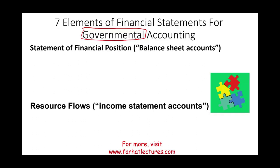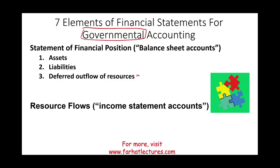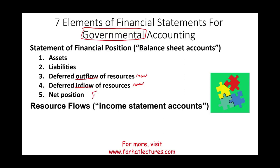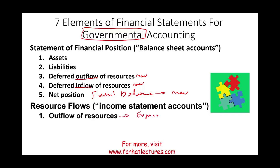Under the statement of financial position we have assets, which should be familiar, and liabilities, also familiar. The third element is deferred outflow of resources — this should be a new term — and deferred inflow of resources, also a new term. We also have net position, sometimes called fund balance. This should be a new account, but conceptually it won't be entirely new. Resource flows include outflow of resources, equivalent to expenses, and inflow of resources, most similar to revenues.